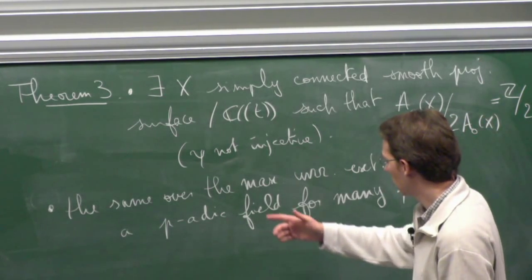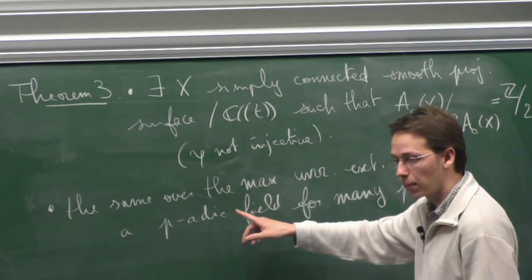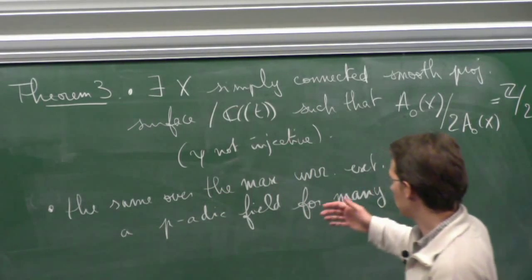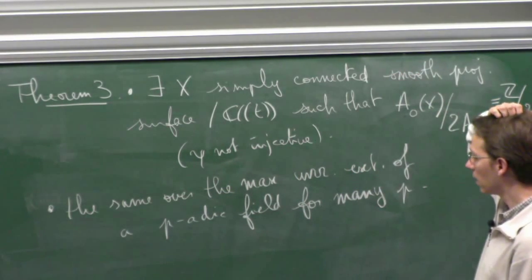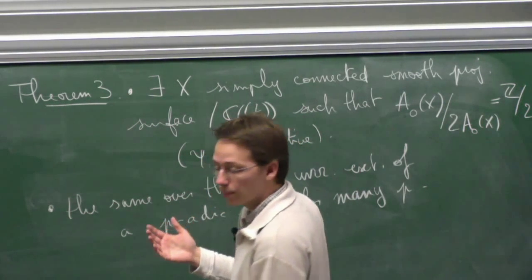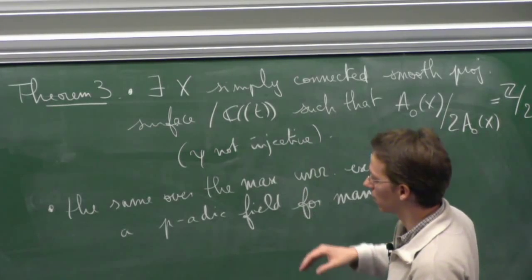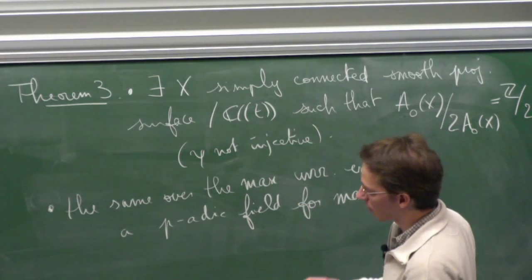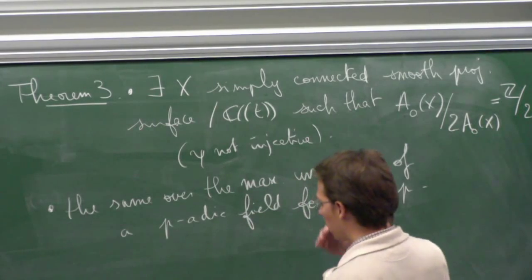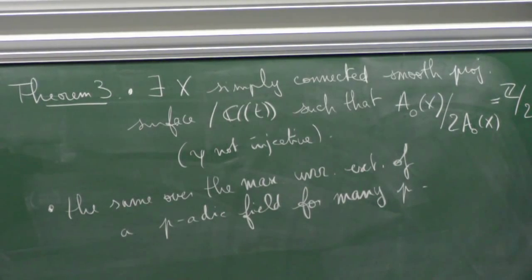Another perhaps unexpected phenomenon: these counterexamples over strictly local fields are surfaces defined over some p-adic field. You can apply Theorem 2 to them over the p-adic field — the cycle map is injective there — and it remains injective over any finite unramified extension since the Tate conjecture is still satisfied. But when you pass to the limit — the maximal unramified extension — it's no longer injective. This is a strange phenomenon: injectivity holds over every finite level but fails at the limit.